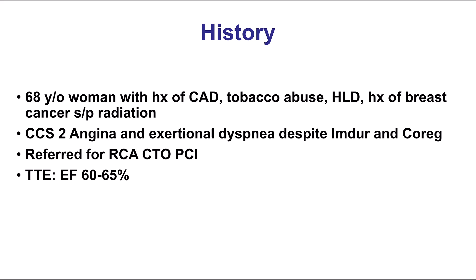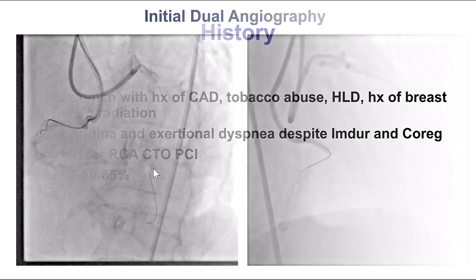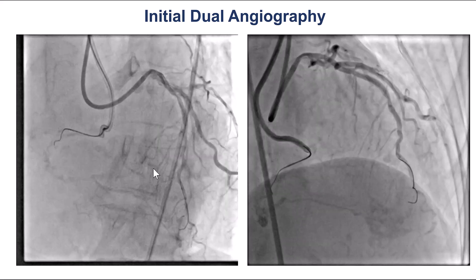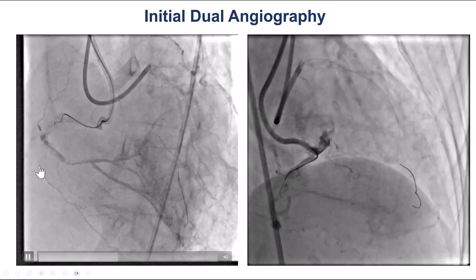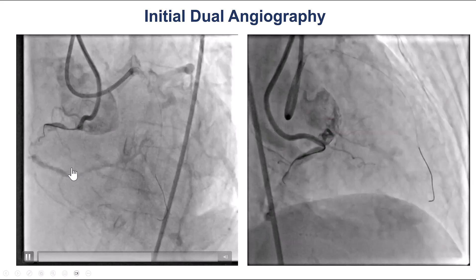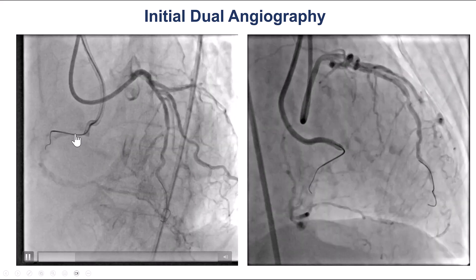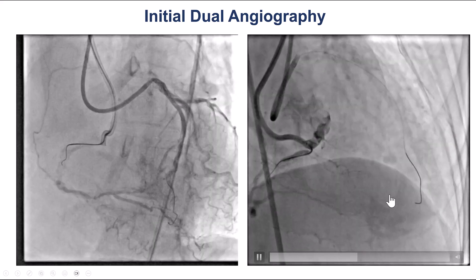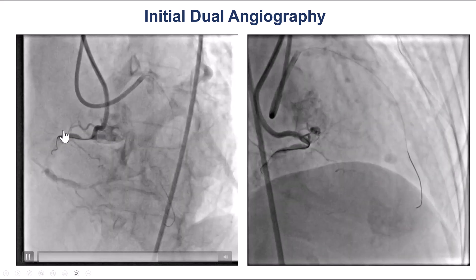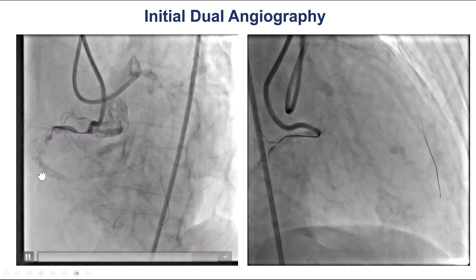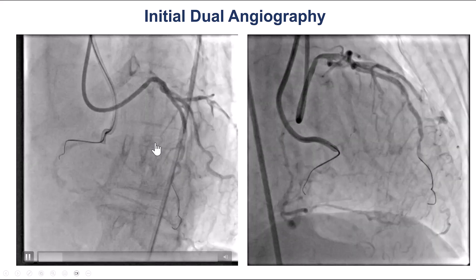The patient was a woman with a history of breast cancer that was treated with radiation treatment. She had angina despite medical therapy and a right coronary CTO, as well as normal ejection fraction, and was referred for PCI of the right coronary artery CTO. The coronary angiogram dual injection shows a heavily calcified right coronary artery, which is not uncommon in patients who had previous radiation treatment. The distal vessel fills by septal and epicardial collaterals, the occlusion seems to be relatively short, and the proximal vessel is significantly diseased.